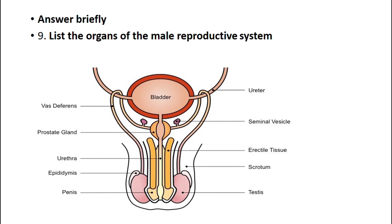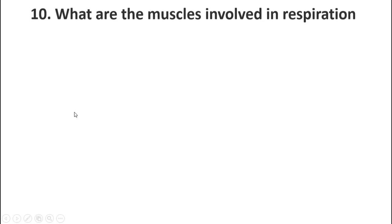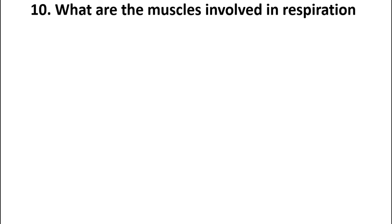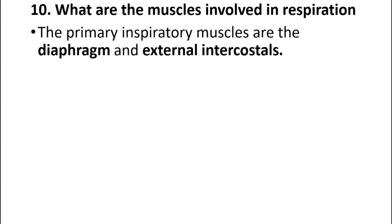List the organs of the male reproductive system. The male reproductive system consists of seminal vesicles, scrotal tissues, scrotum, testis, penis, epididymis, urethra, and prostate glands. The muscles involved in respiration: the primary inspiratory muscles are the diaphragm and external intercostals.